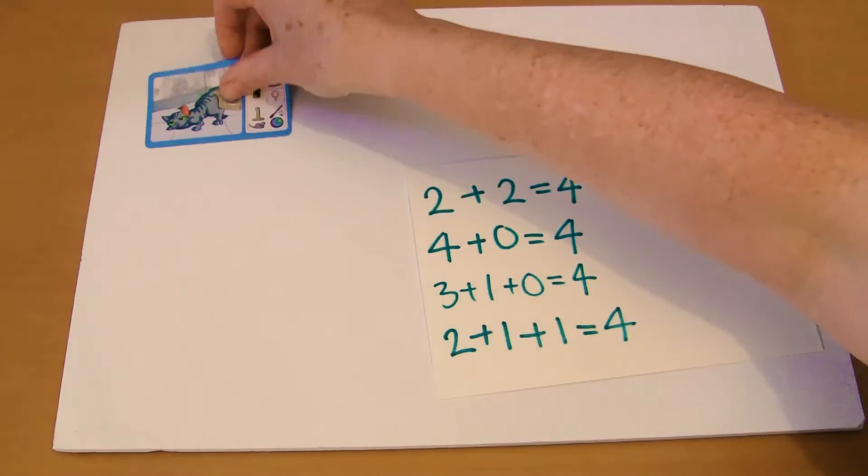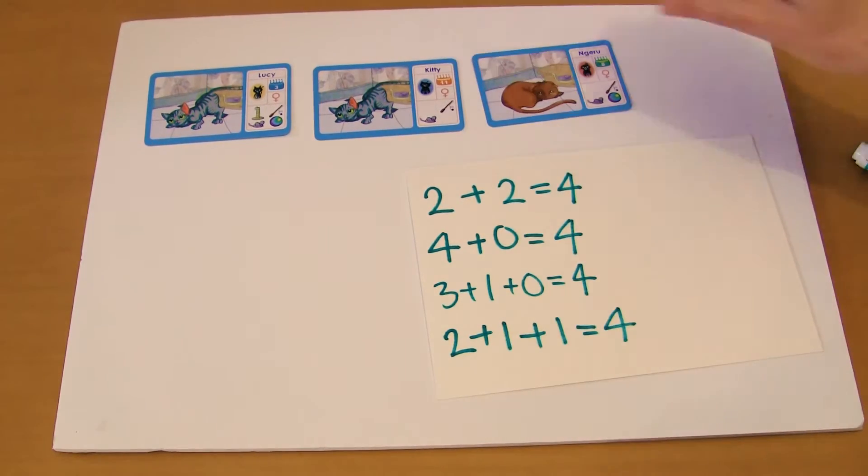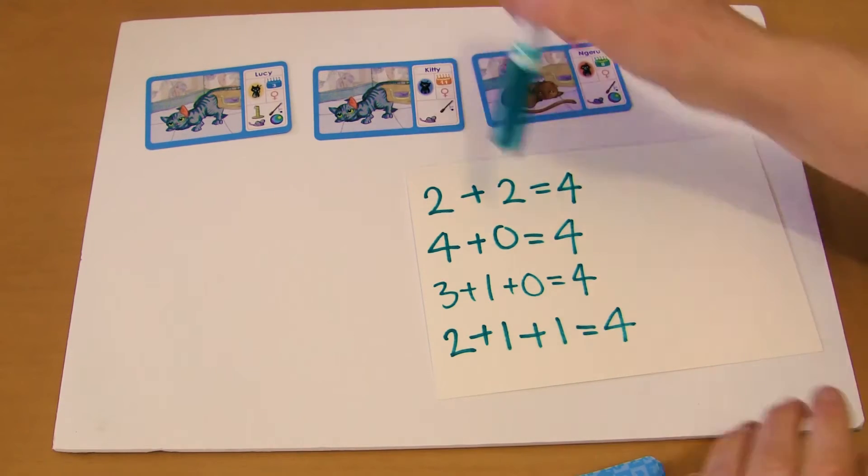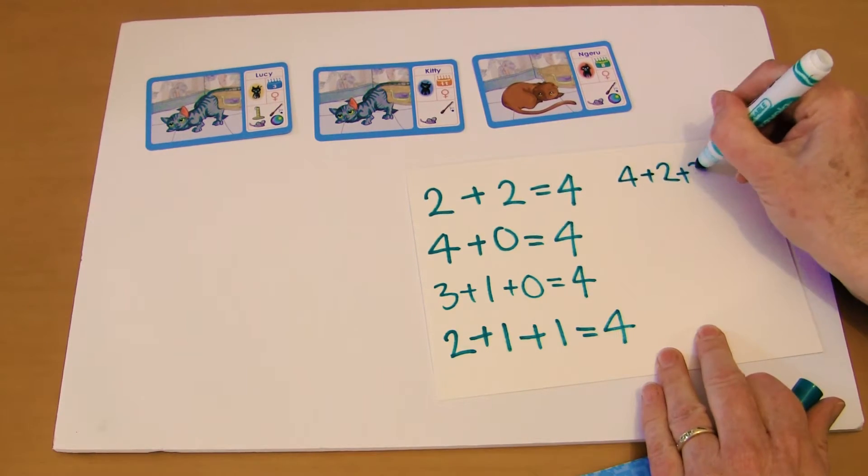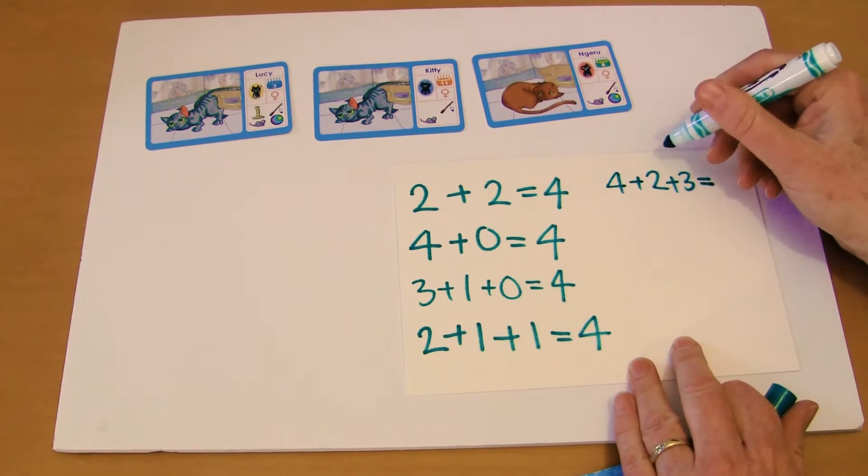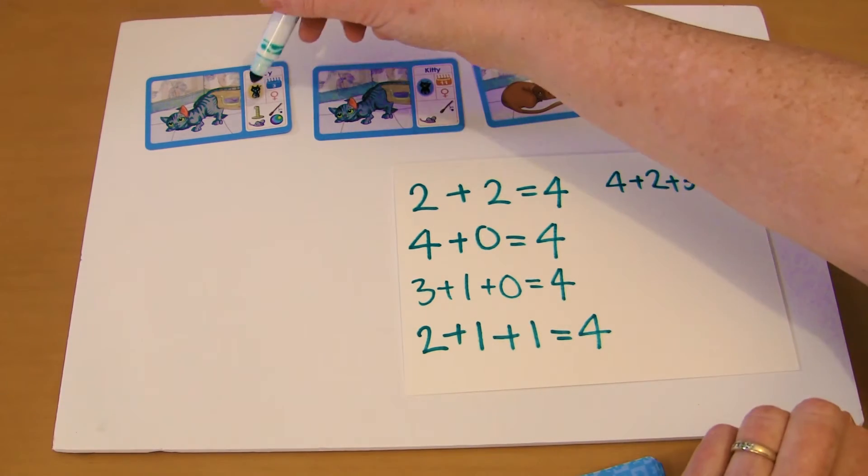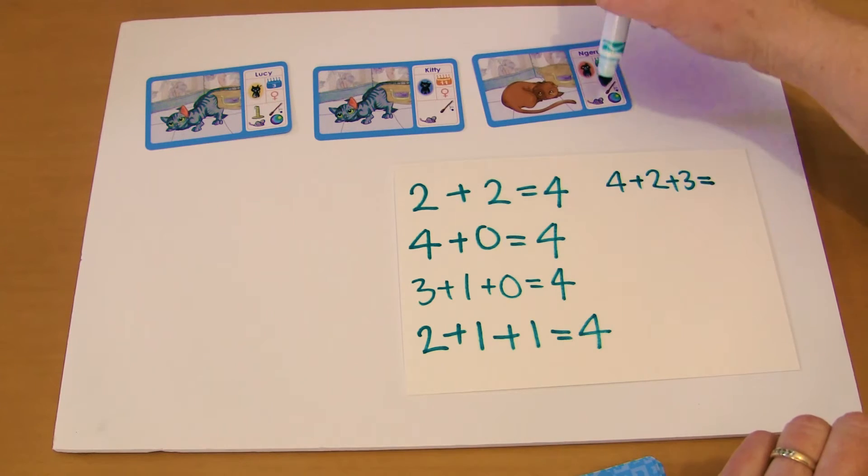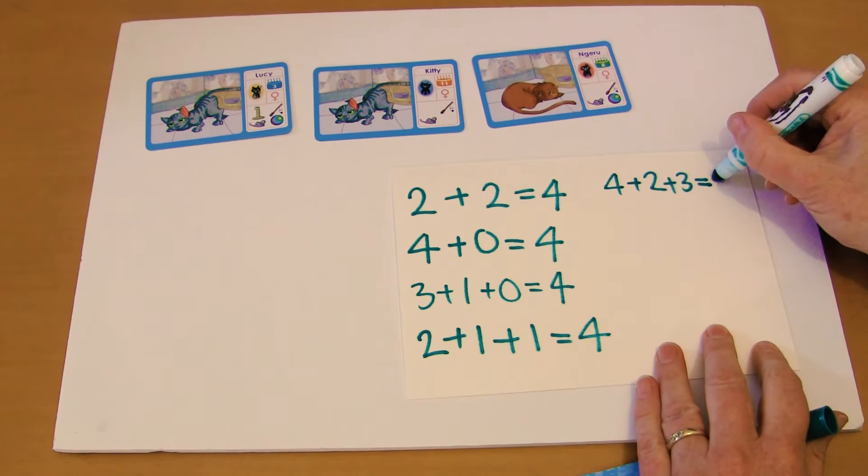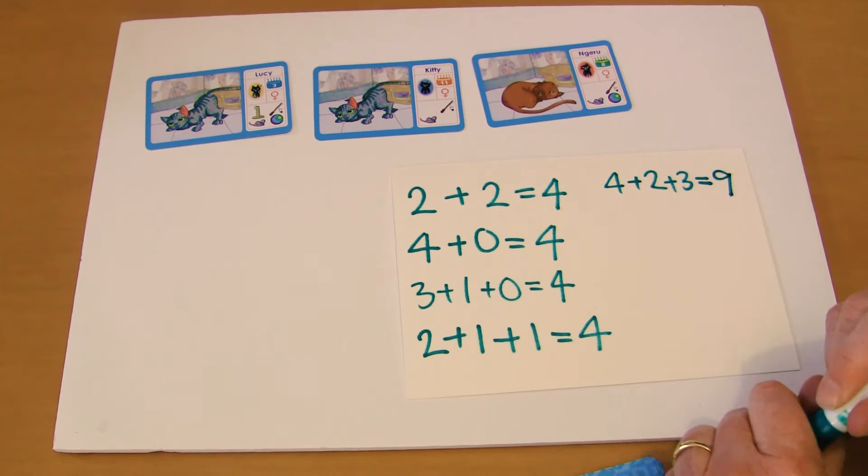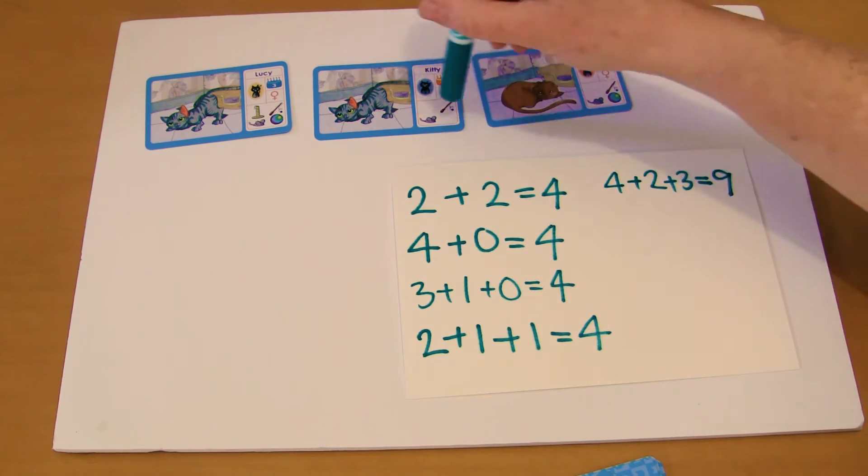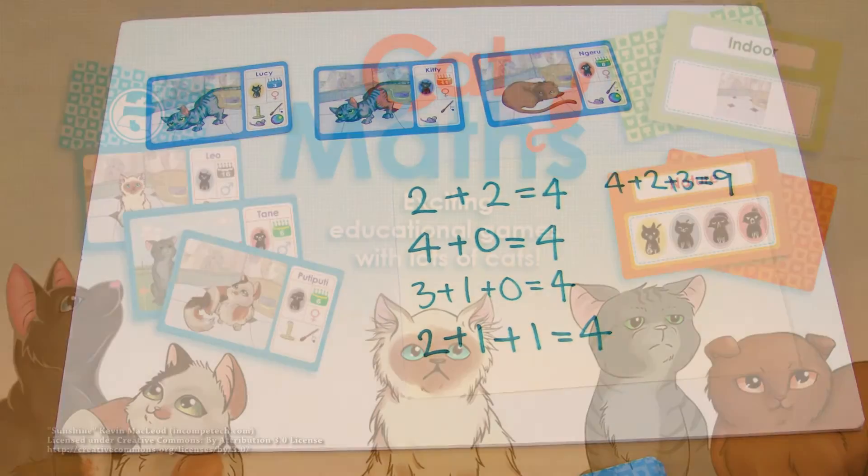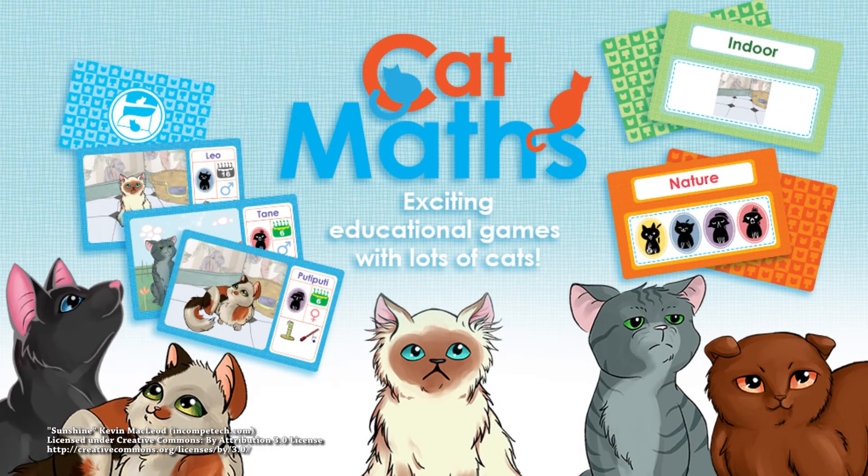So we could have 1, 2, 3 cards, so we've got 4 plus 2 plus 3 equals, and depending on how good their adding is, they might count on, so 4, 5, 6, 7, 8, 9, or they might have other ways of doing it. But they've got self-correction because they can actually see they've added up to 9, and yes, it does add up to 9. So we'll see you next time.